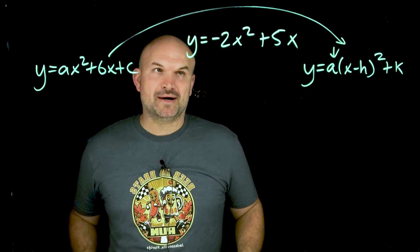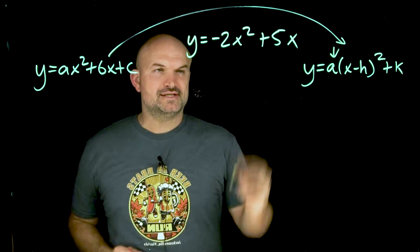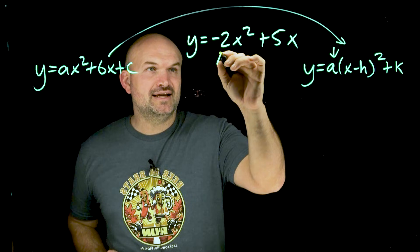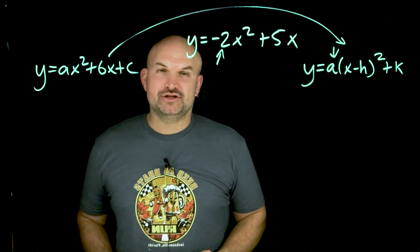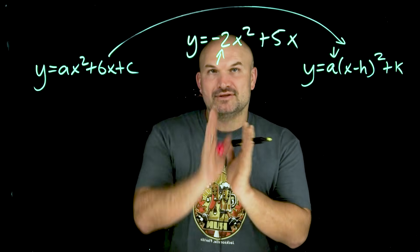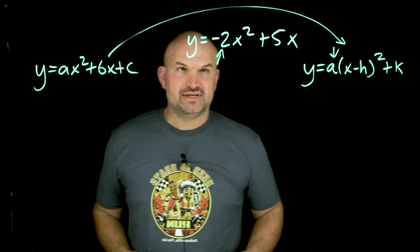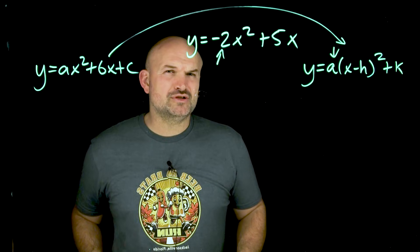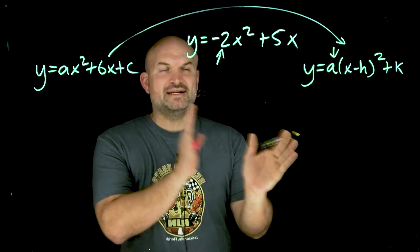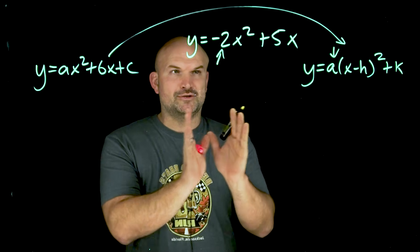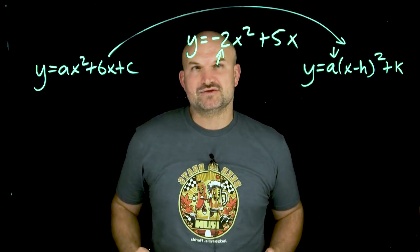To go about completing the square, there are a couple of things we need to look at first — kind of a checklist. The first thing is we cannot have a coefficient on our quadratic term, so we need to get that factor away from the x squared. We're keeping y on the left-hand side and we're only going to work on the right-hand side.